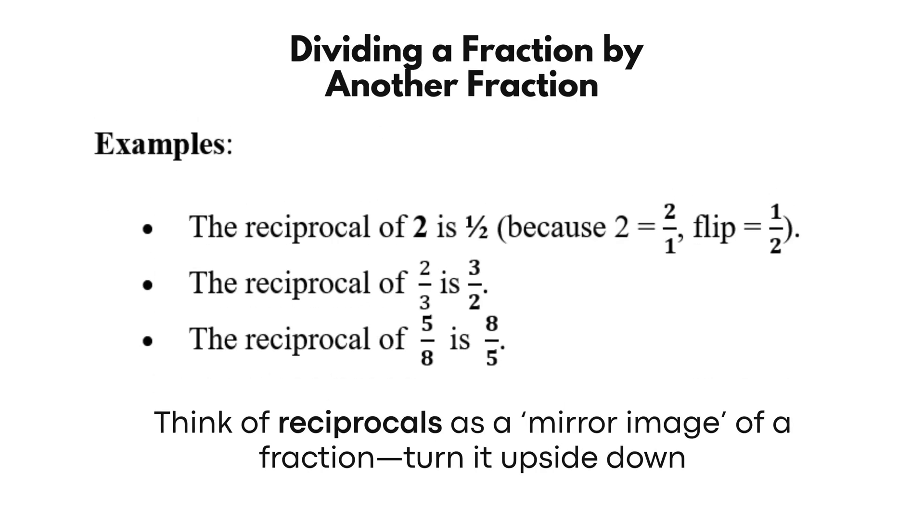Examples: The reciprocal of 2 is 1 half, because 2 equals 2 over 1, flip equals 1 half. The reciprocal of 2 thirds is 3 halves. The reciprocal of 5 eighths is 8 fifths. Think of reciprocals as a mirror image of a fraction. Turn it upside down.